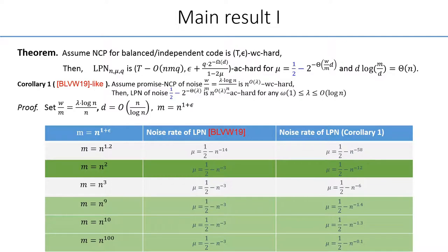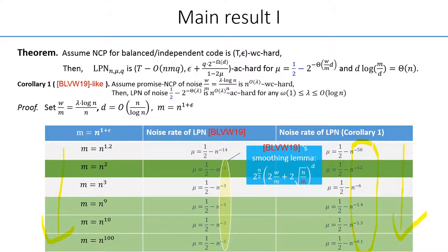But when M increases to polynomials of higher orders, then our result in terms of the LPN's noise rate becomes much better and it keeps improving. In contrast, the result of BLVW cease to improve for M equals to N cubic and beyond. This is because in their smoothing lemma, the bound consists of two terms.